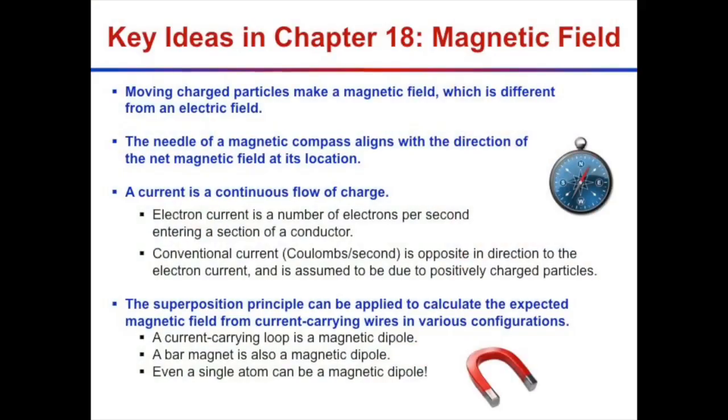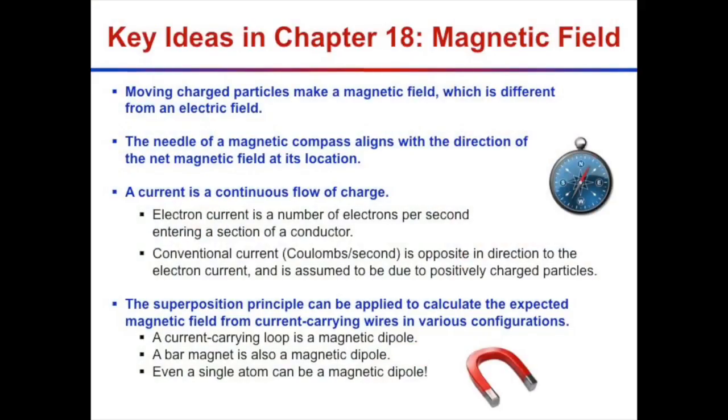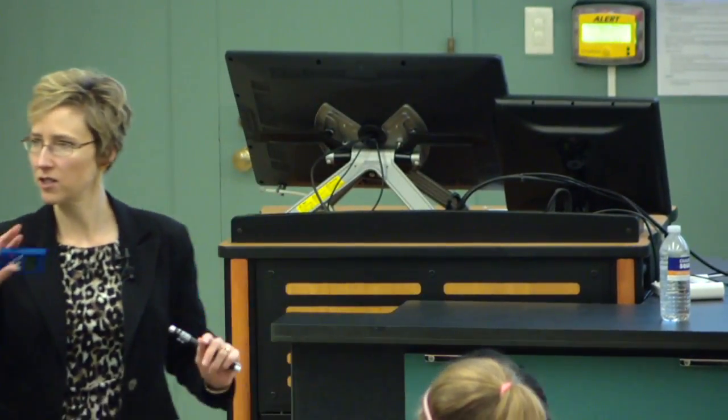We are learning about magnetic fields, and here are the key ideas in Chapter 18, straight out of your text. A moving charged particle makes a magnetic field, and the magnetic field is a different concept from the electric field. Later on, Einstein will tell us they're kind of like two sides of the same coin, but when measuring them in the lab, they appear as distinct entities.